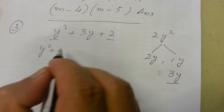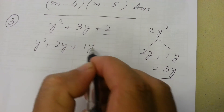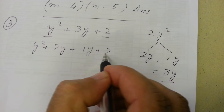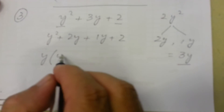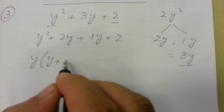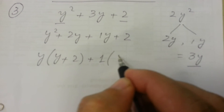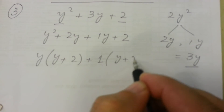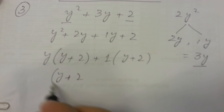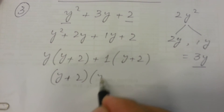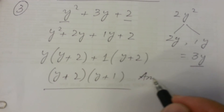So we write y squared plus 2y plus 1y plus 2. Taking y common from the first two terms gives y(y plus 2), and 1 is common in the last two terms giving 1(y plus 2). So (y plus 2) is again common, and the answer is (y plus 2)(y plus 1).